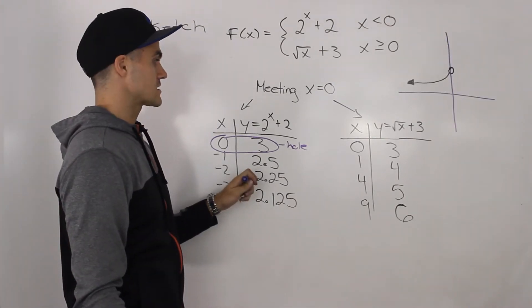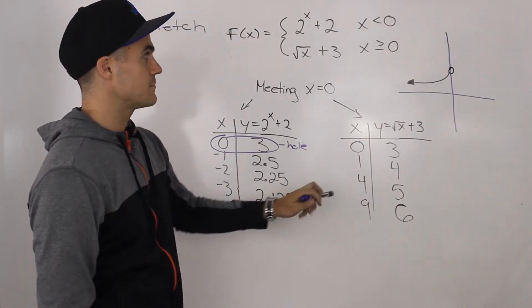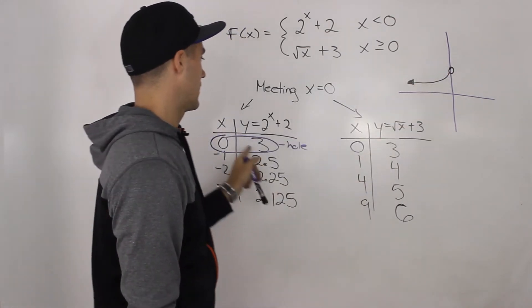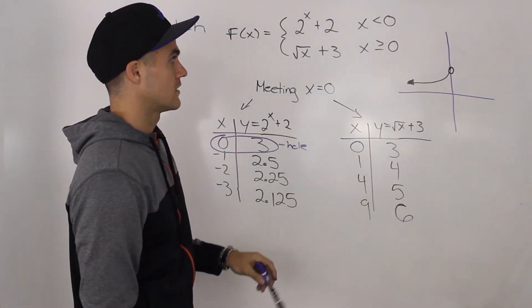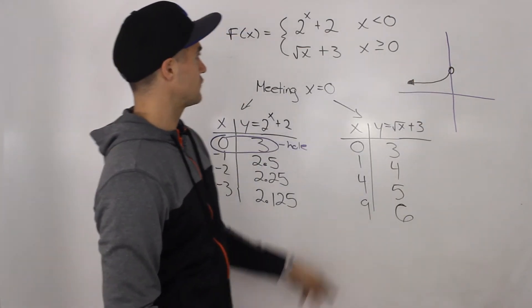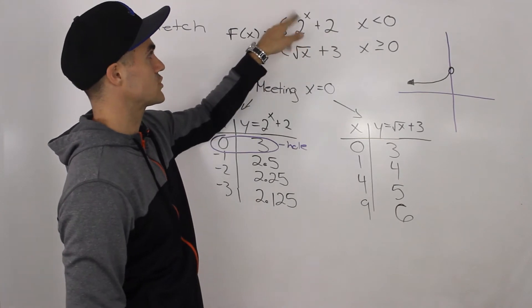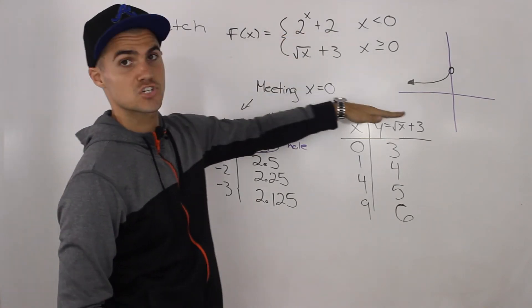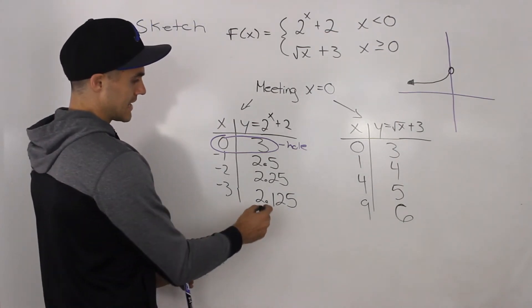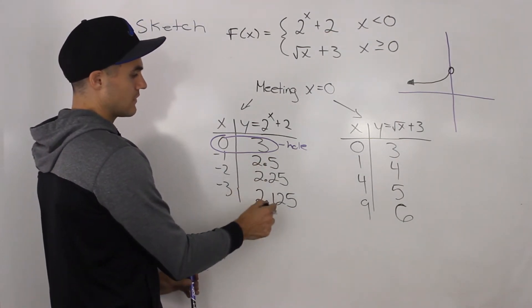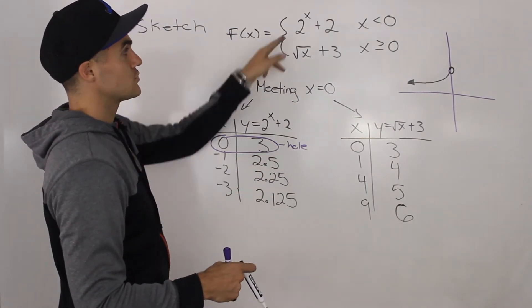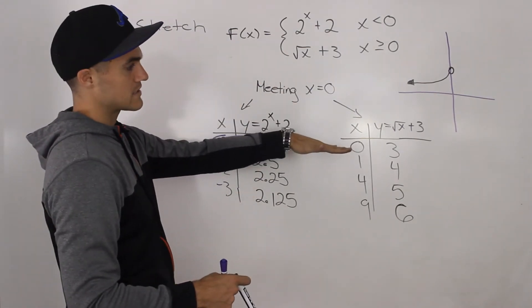When we graph this portion of the graph, the left piece, it's going to look like this, and there's going to be this hole at zero and three. So it takes the shape of an exponential function, which makes sense because this is an exponential function, 2^x + 2, it's just been shifted up by two. If you remember, 2^x has a horizontal asymptote at zero.